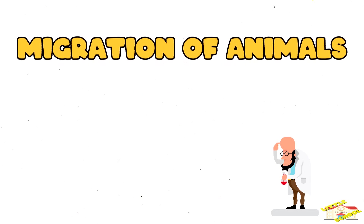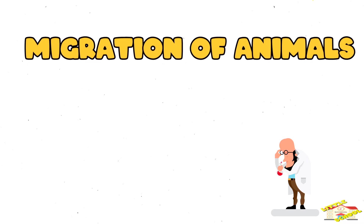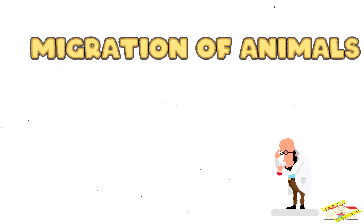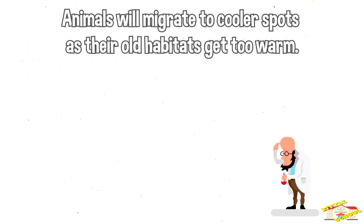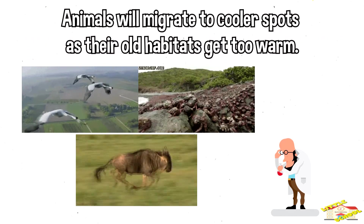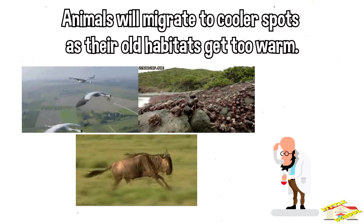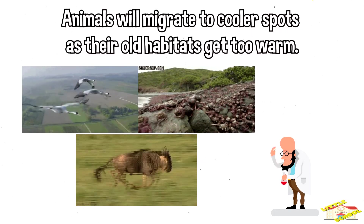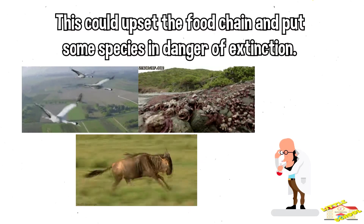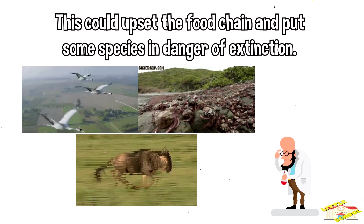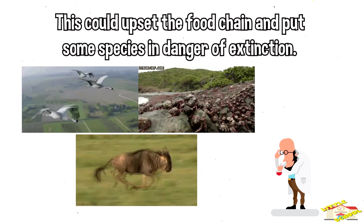Migration of animals. Animals will migrate to cooler spots as their old habitats get too warm. This could upset the food chain and put some species in danger of extinction.